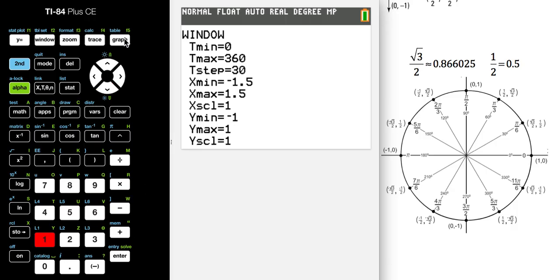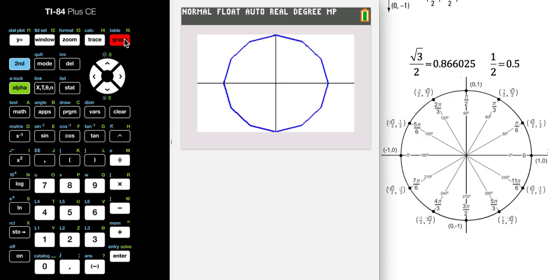Now we should be able to hit graph, and we have—you can see those little points going along there—the matching points that go around the circle.